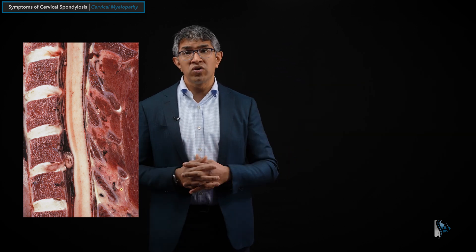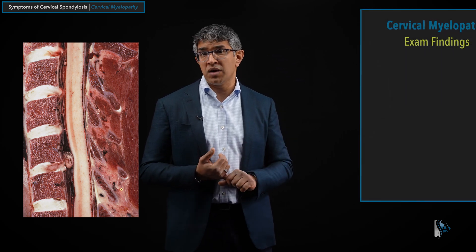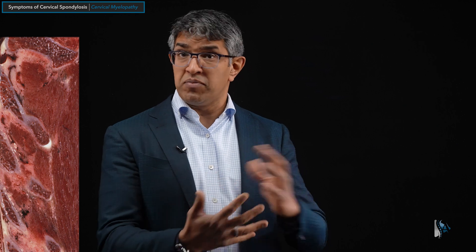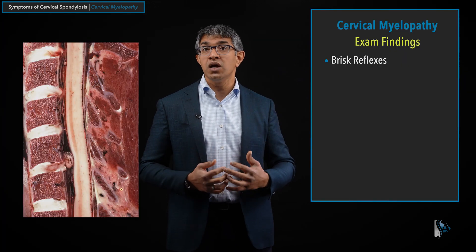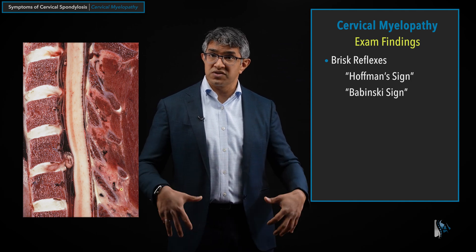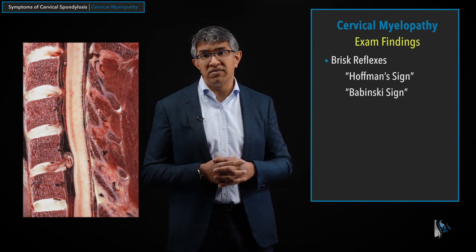When you see a specialist for evaluation, they will look for findings unique to myelopathy. First and foremost are reflexes — they are generally brisk. We'll check the bicep or brachioradialis reflex, and it will be quite brisk. Patients sometimes think brisk reflexes are good, but too brisk or not brisk enough are both concerning. Classically, spinal cord dysfunction causes hyperreflexia in the arms and legs from the level of compression below. Another finding is the Hoffman sign, which is also a sign of hyperreflexia — that's why they flick your finger. All of that gauges spinal cord reflexes and function.